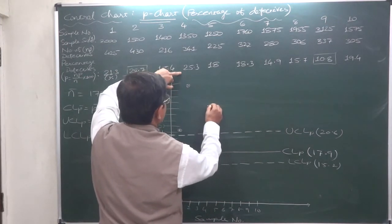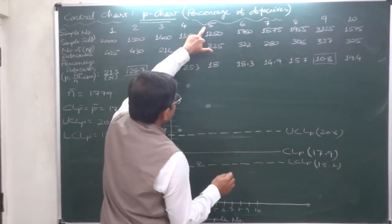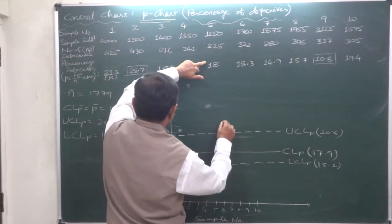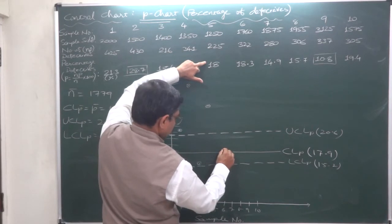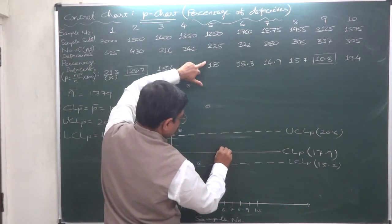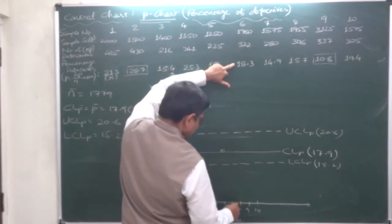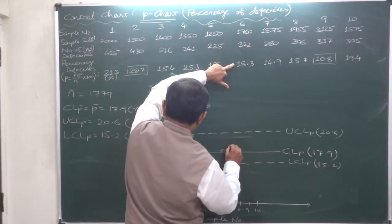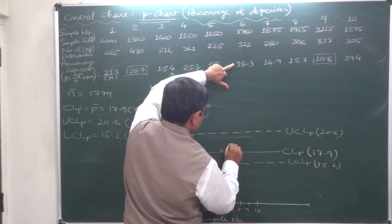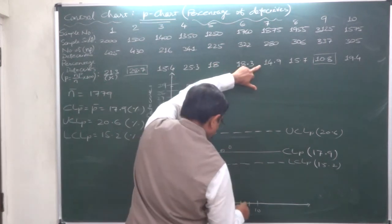Sample number five is 18, slightly above the center line. Sample number six has 18.3. Sample number seven has 14.9, one millimeter below 15.